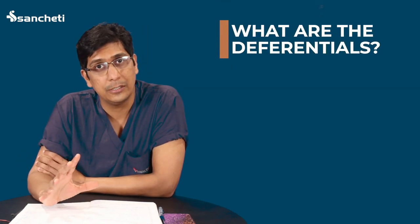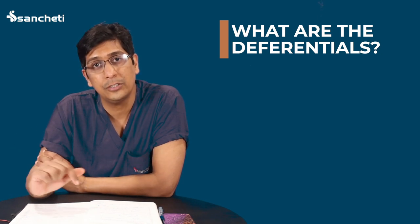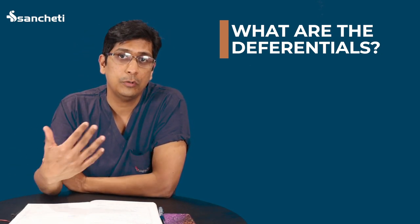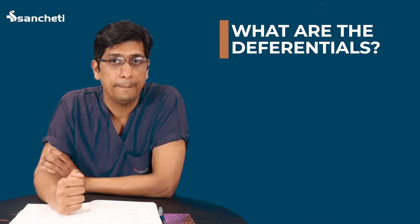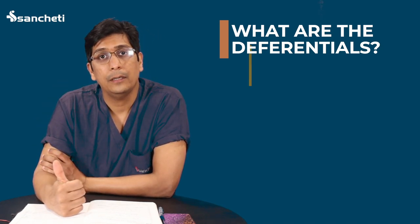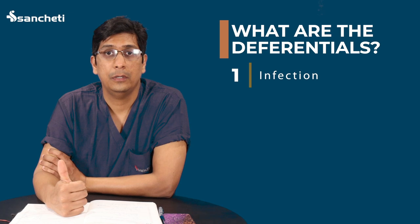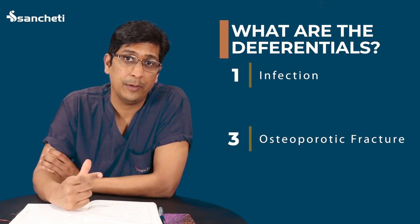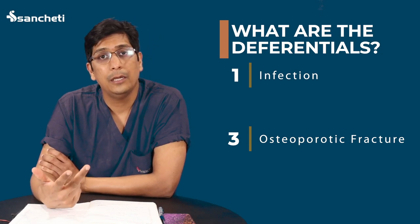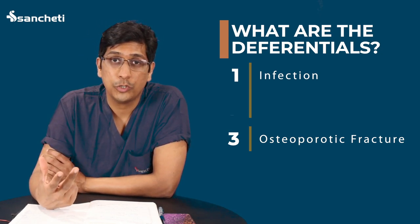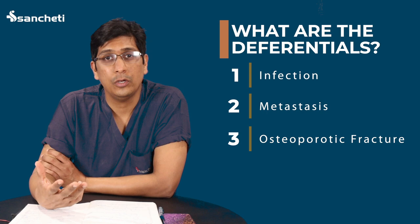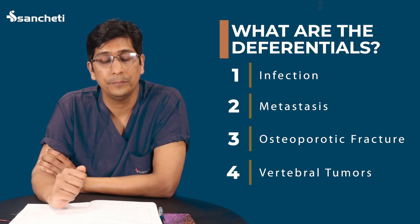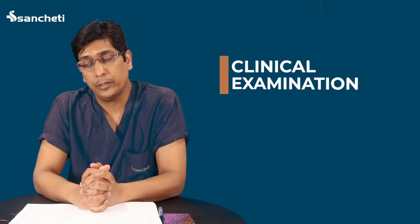What are the other differentials? If you see such a lesion, what other things should come to a physician's mind? Number one, it can be infection. Number two, it can be metastasis — that is cancer which has spread from other parts of the body. Number three, it can be an osteoporotic fracture. Or number four, some other primary vertebral bony tumor.